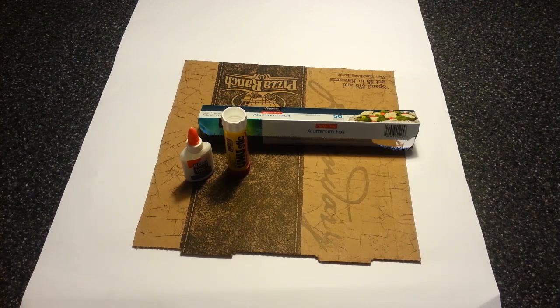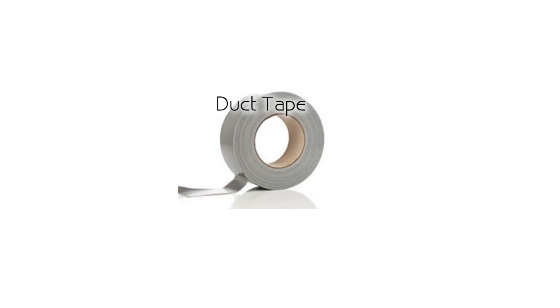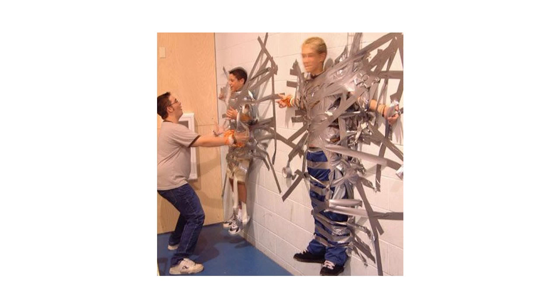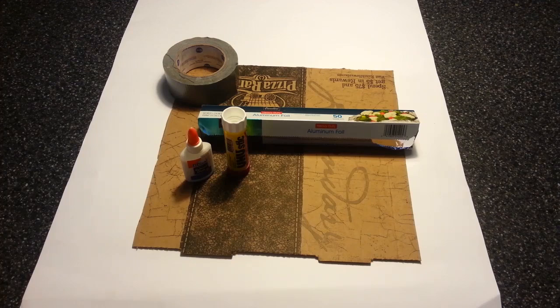A glue stick. Elmer's glue is okay but it's messier. And the handyman's best friend and favorite tool, duct tape. You know this stuff is good when you can tape a person to the wall with it. A couple of push pins.